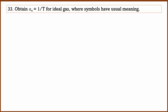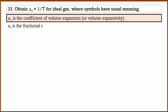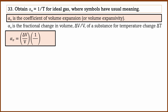The 33rd question is a derivation: show that Alpha V equals 1 by T for an ideal gas. Alpha V is the coefficient of volume expansion, also called volume expansivity. Its definition is: Alpha V is the fractional change in volume of a substance for a unit temperature change. The formula is Alpha V equals (ΔV/V) divided by ΔT.